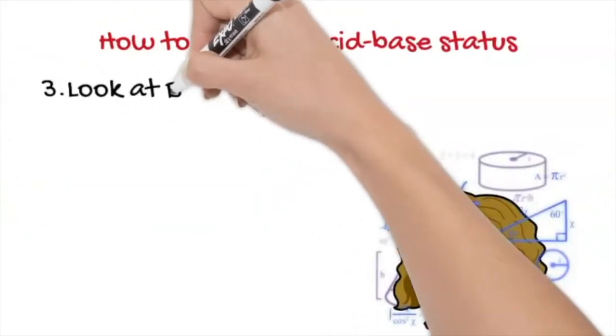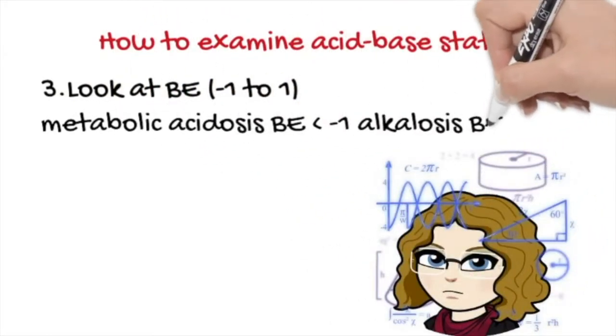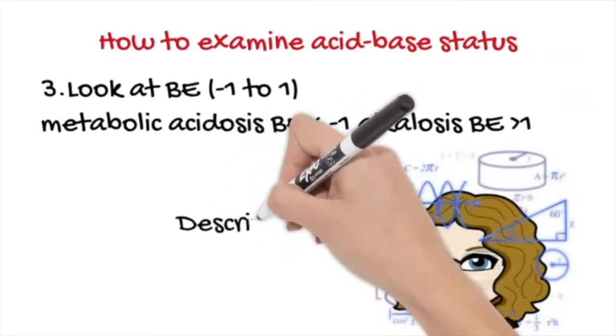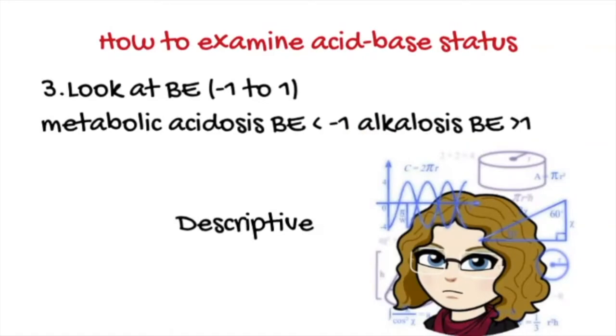The third step corresponds to checking the levels of base excess or bicarbonate. Even if this belongs to the traditional method, it can help us detect metabolic alterations because the traditional method is more descriptive than mechanistic.